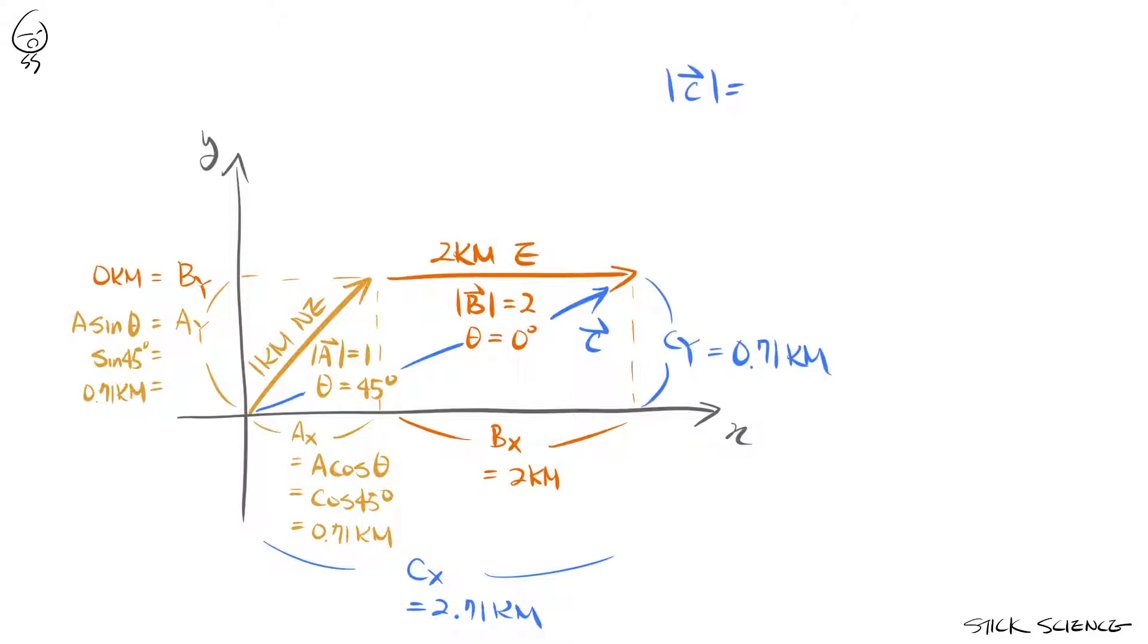Using the Pythagorean theorem, we can calculate the magnitude of vector c to be 2.8 kilometers. And while arctangent 0.71 over 2.71 can either be 14.7 degrees or 194.7 degrees, we know vector c to be in the first quadrant. So the direction of vector c is 14.7 degrees north of east. And voila, Mr. Stick has his precise shortcut. Go 2.8 kilometers, 14.7 degrees north of east.